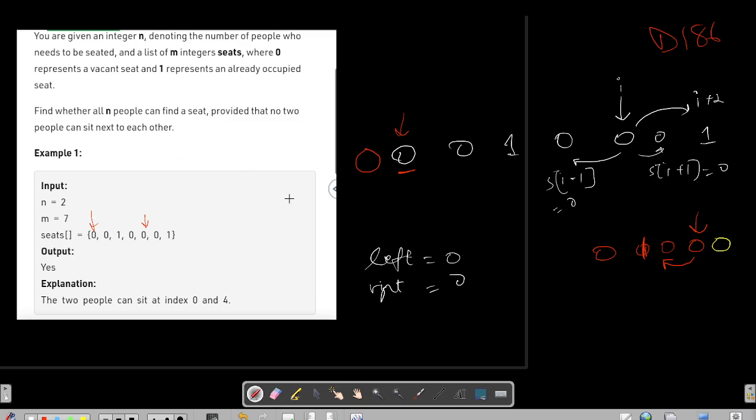So that means for each and every index, we have to maintain what is the left value and what is the right value. And if it is equal to zero—and all these things will happen if and only if my seats of i is zero. So what will happen?